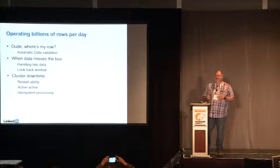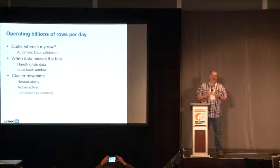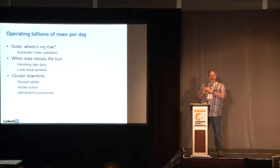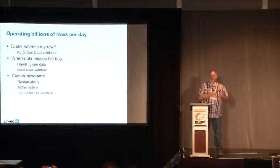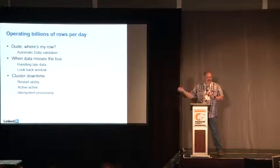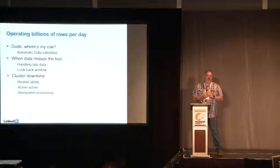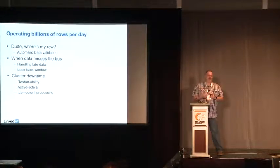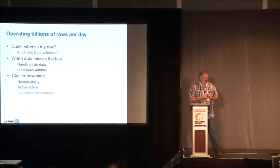Issues we've run into operationally: a lot of times people want to know where their data is. They may be looking at an incorrect version or think something was written in production when it wasn't. This is where having good data validation is really important. Most of our checks rely on row counts: if somebody says production has a million records, our checks verify we also have a million records and that the timestamps line up. As somebody once said: you might have the greatest pipeline in the world, but if you don't have a check that proves it, who cares?